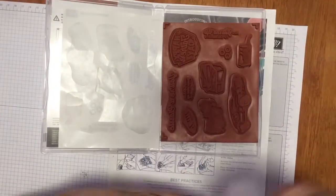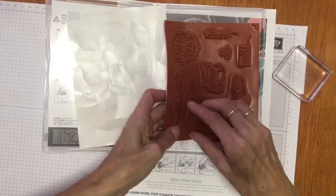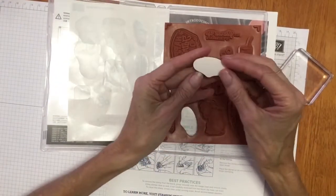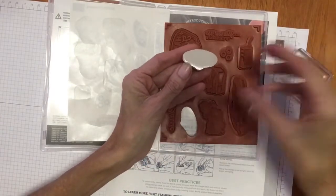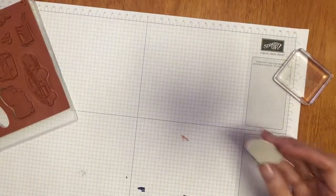Now when you want to mount them onto your block, it's just the same as you would with the clear stamps. You're going to peel it out of the rubber and take the backing off, and then you'll get your sticky sheet, so we'll just remove that.